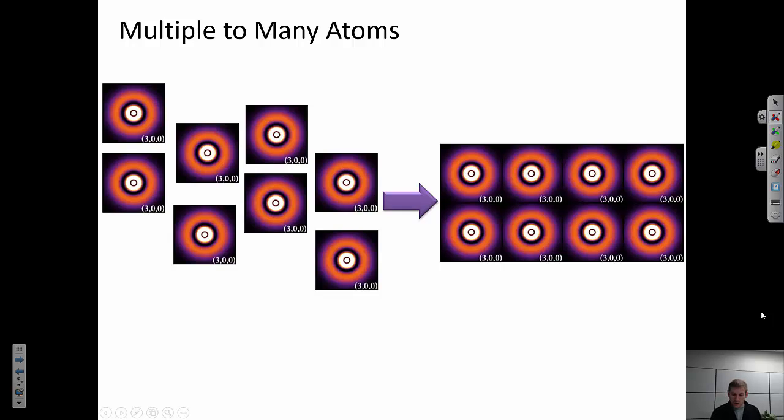If I have even more atoms, again, I would start off with eight 3s orbitals, which are, remember, if these atoms are individual, they don't see each other. All those 3s orbitals are exactly the same energy level. When they start to interact, they start to split. And so now I'm going to have eight potential energy levels.